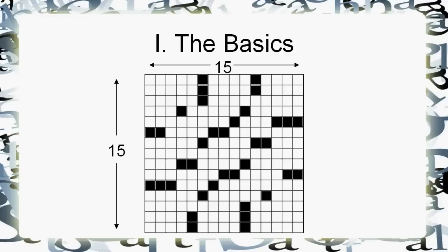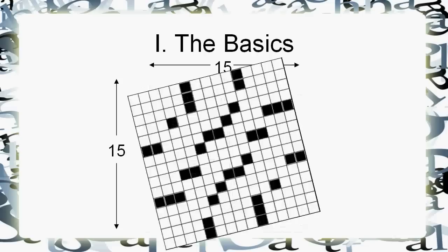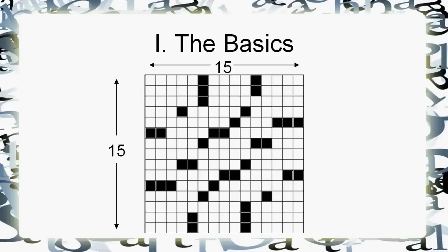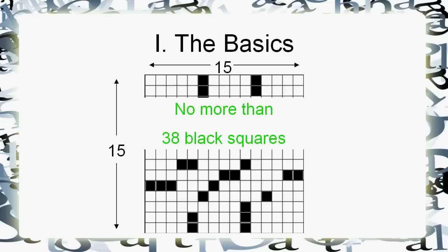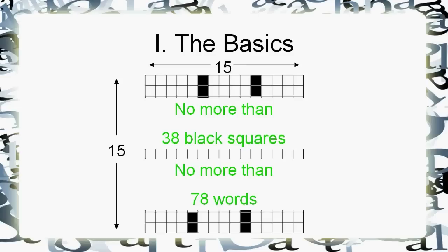The black squares are going to look something like this. Generally in these puzzles they're going to be symmetric, which means that if you took the grid and flipped it 180 degrees, the pattern of black squares stays the same. That's unfortunately not the only restriction. You can't have too many of them — try to keep it under 38. 40 is sometimes okay, but 38 is a good rule of thumb.